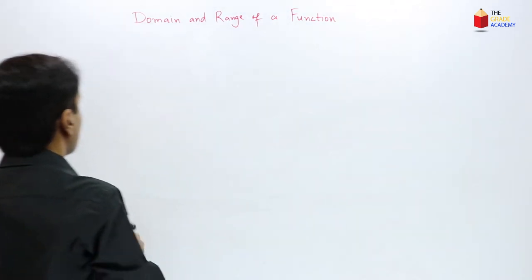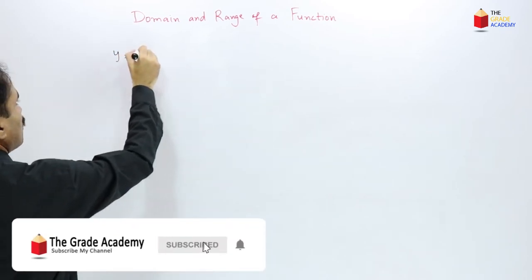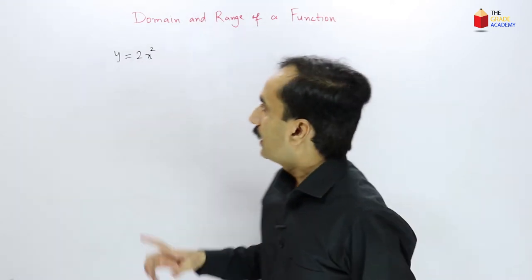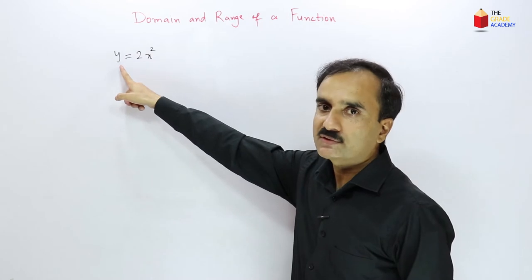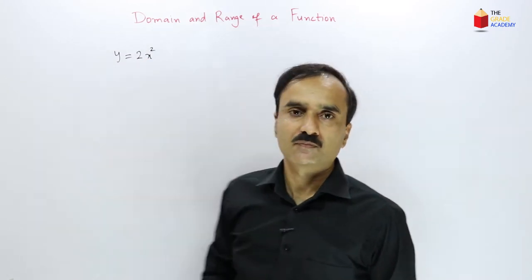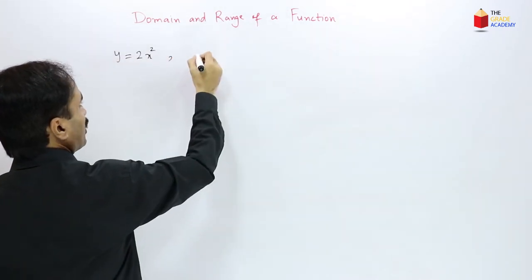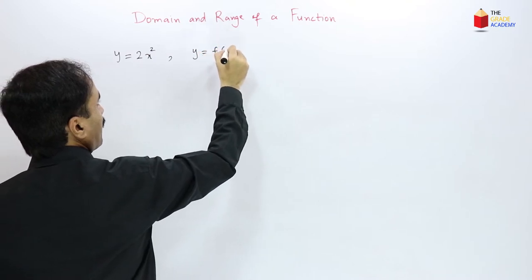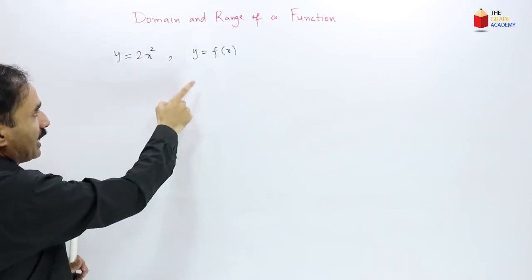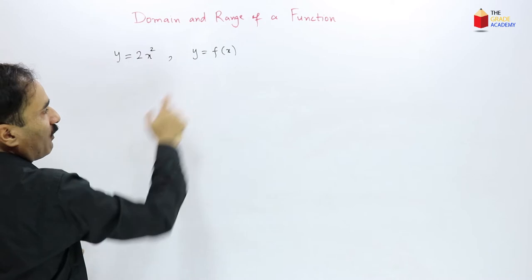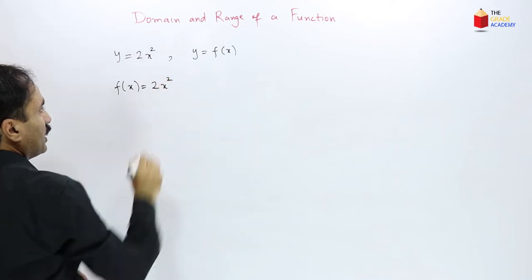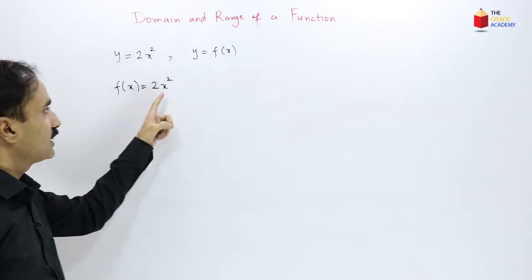For example, y is equal to 2x squared. Here, for every value of x, there is only one value of y. So y is a function of x, and we write y equals f of x. This function can represent this equation: f of x is equal to 2x squared.